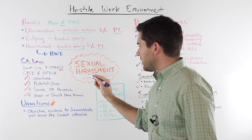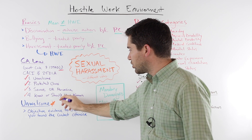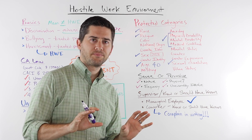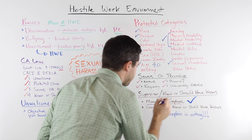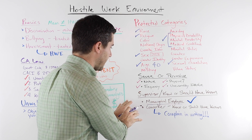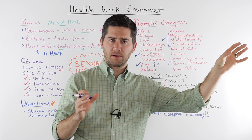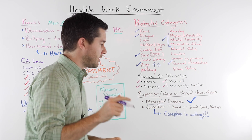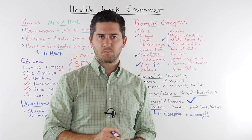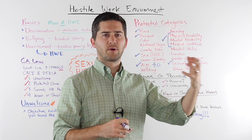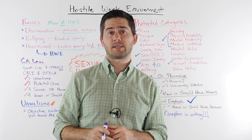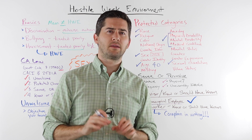To hold the company liable, you have to show it knew or should have known that the harassment was taking place. If the harassment is being conducted by a managerial employee — any manager, not just your own — there's automatic liability for the company. But if the harassment is being done by a co-worker and not a manager, you need to show the company knew or should have known. This is usually easy to show: if you've written a complaint to HR, complained verbally, or a manager witnessed the harassing conduct, the company knew or should have known.